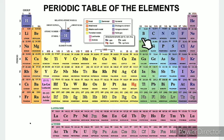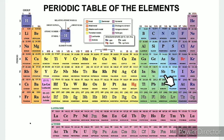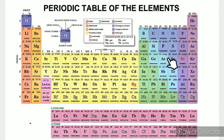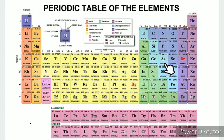There are seven metalloid examples recognized. The metalloids are: Boron, Silicon, Germanium, Arsenic, Antimony, Tellurium, and Polonium. These elements share characteristics of both metals and non-metals and are known as metalloids.